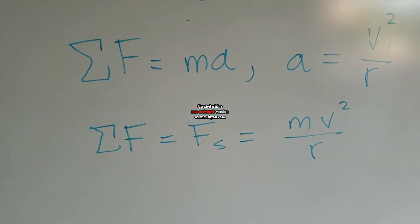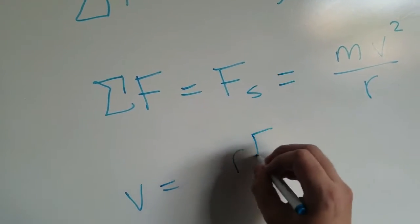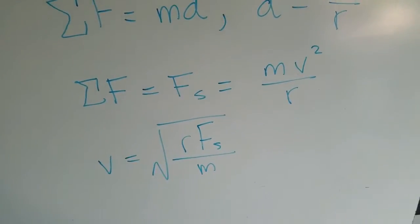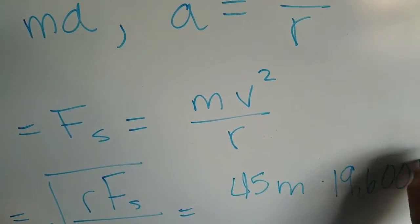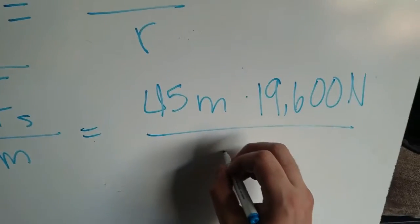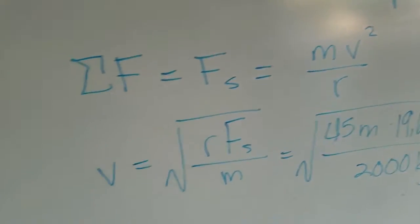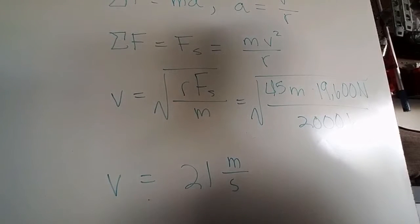From here, it's as simple as isolating v and calculating the velocity. v equals the square root of r times the frictional force divided by the mass. Plugging in 45 meters, the frictional force of 19,600 Newtons, and the mass of 2,000 kilograms, we take the square root and get our final velocity: 21 meters per second. That is a reasonable answer.